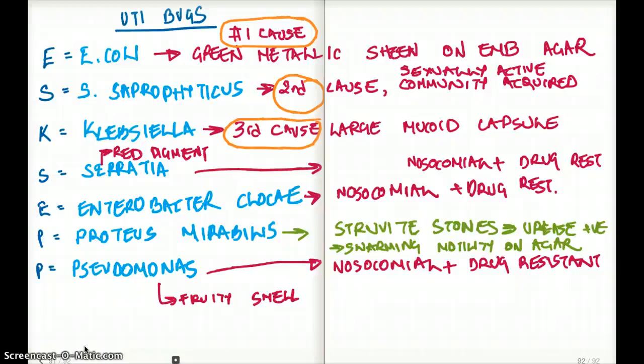Pseudomonas, they're also going to be nosocomial and drug resistant, and they're going to have fruity smell. With Proteus mirabilis, it's going to be urease-positive bugs. They're going to cause struvite stones, and they're going to have swarming motility on agar.